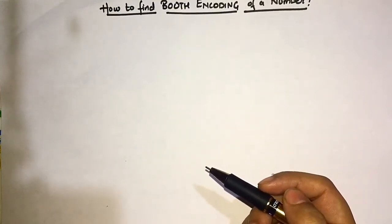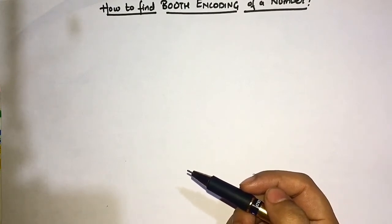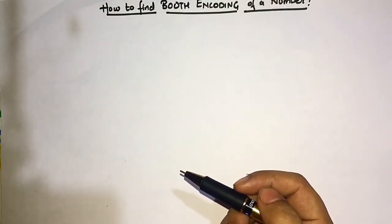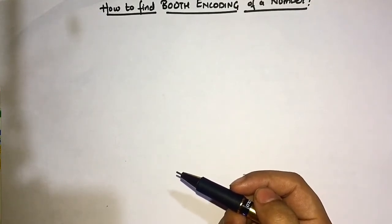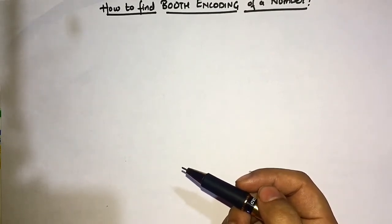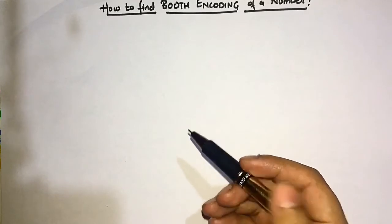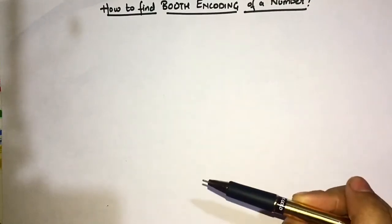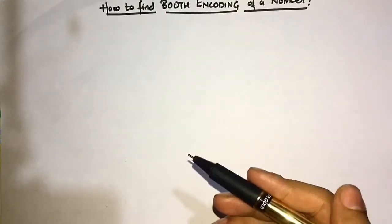Hello guys, welcome to GeeksforGeeks. In today's video I will tell you how to find the Booth encoding of a number, or of a multiplier, and the total number of addition, subtraction, and shift operations needed. Booth algorithm is basically used to multiply two numbers in an efficient way. In the upcoming videos I will cover the whole Booth algorithm and explain why we use Booth encoding rather than normal multiplication.